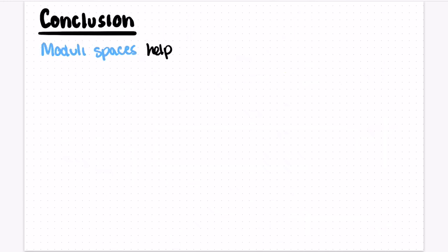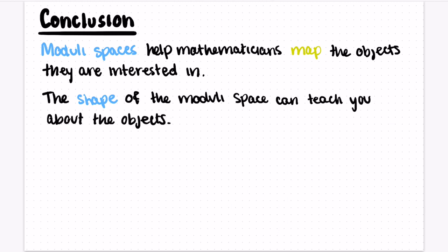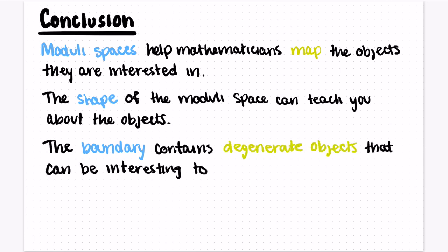Moduli spaces help mathematicians map the objects that they're interested in. So objects that are near to each other will have similar properties, and objects that are far apart will be different from each other. The shape of the moduli space can actually teach you a lot about the objects that you're interested in.